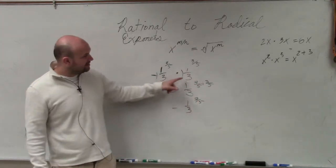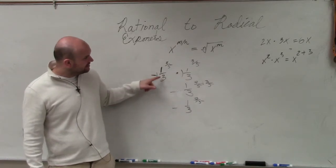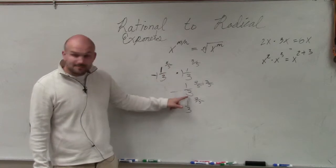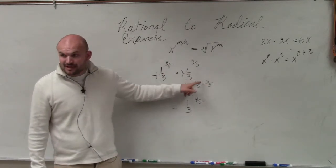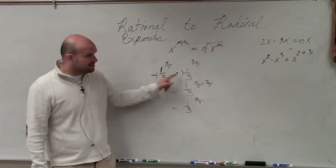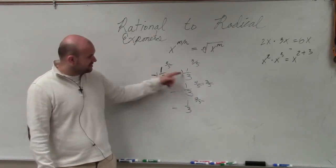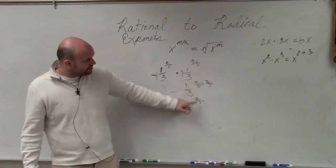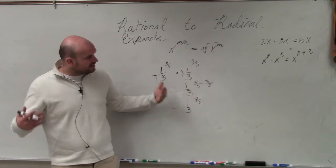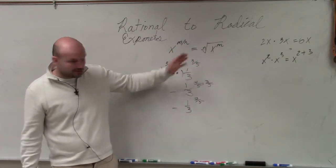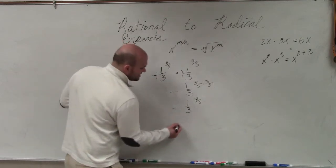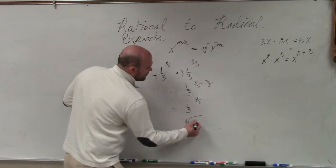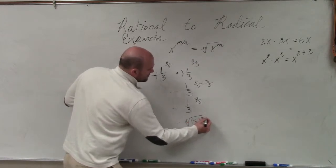In this case, what we're doing is: this is 1 third to the 4 fifths times 1 third to the 3 fifths. You keep the 1 third, and then you add the two exponents. And then you multiply the numbers in front — this one was negative, that one was positive. So negative 1 times 1 is just negative 1. You add the exponents, which gives you 7 fifths. Just to get practice rewriting this as a radical, you can rewrite this as negative the fifth root of 1 third to the 7th power.